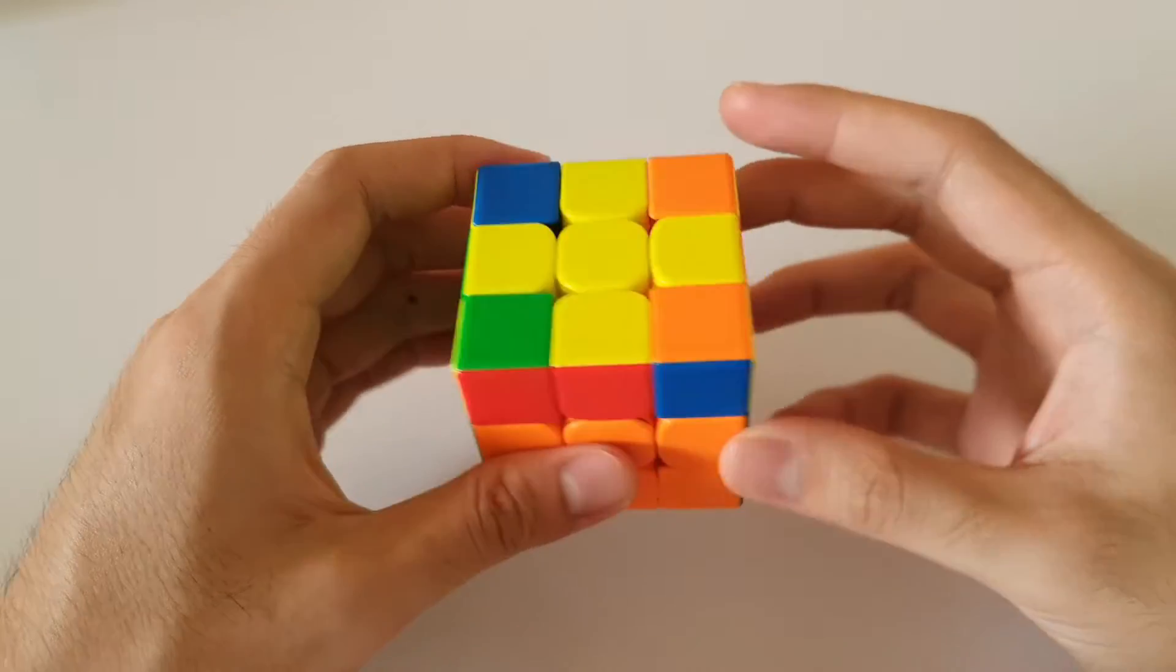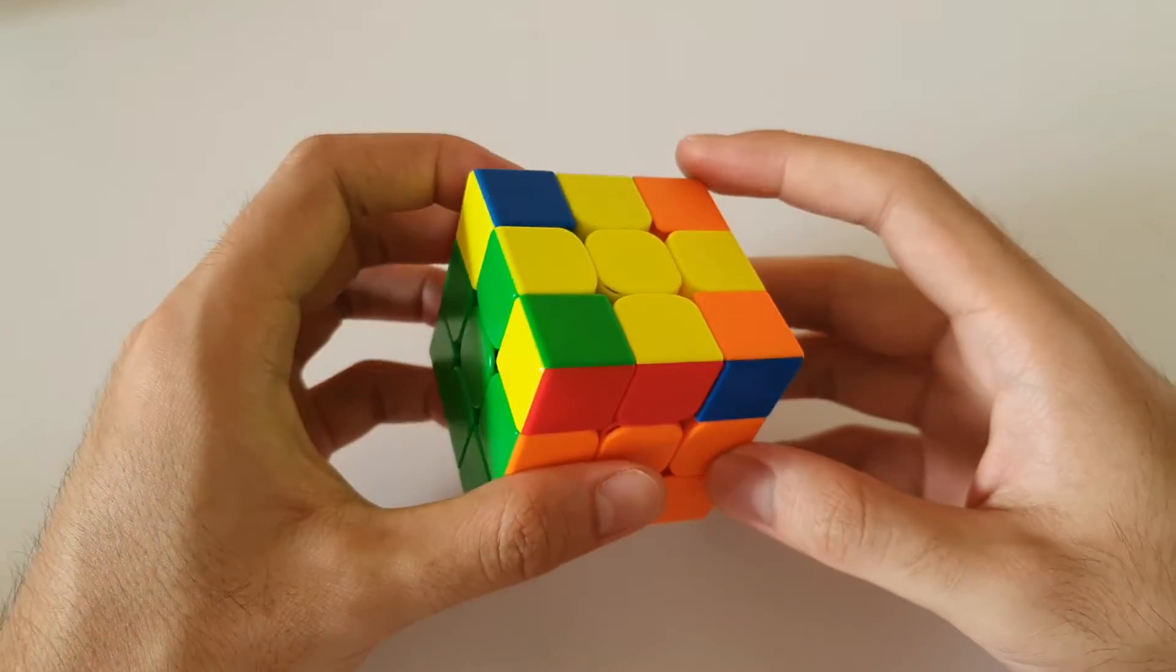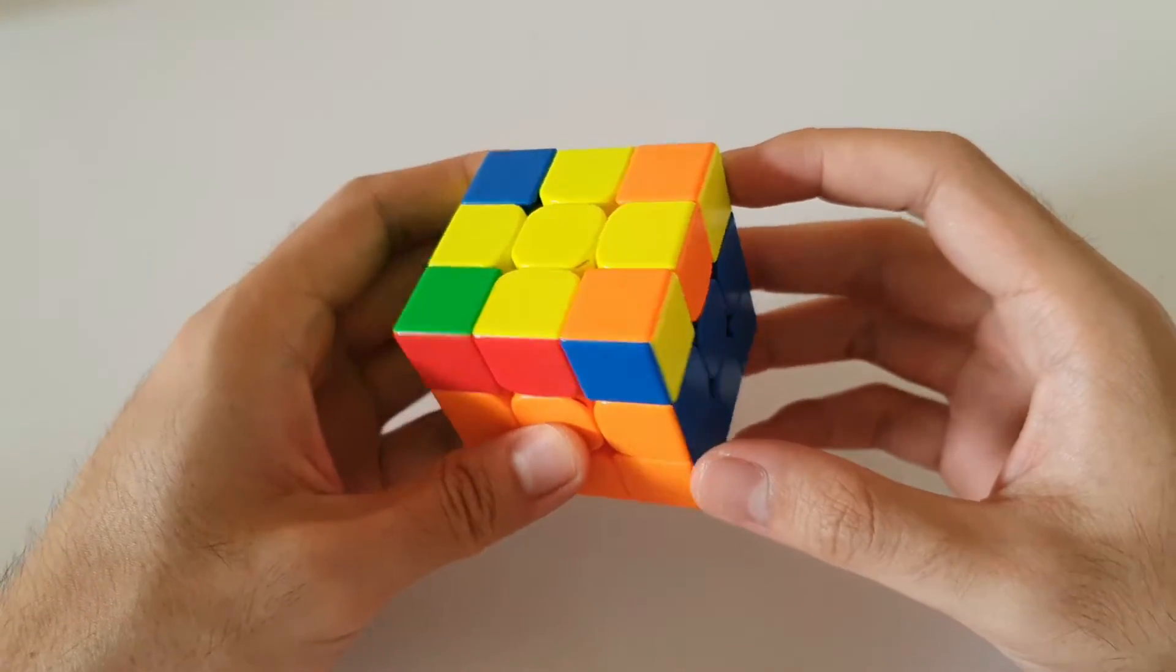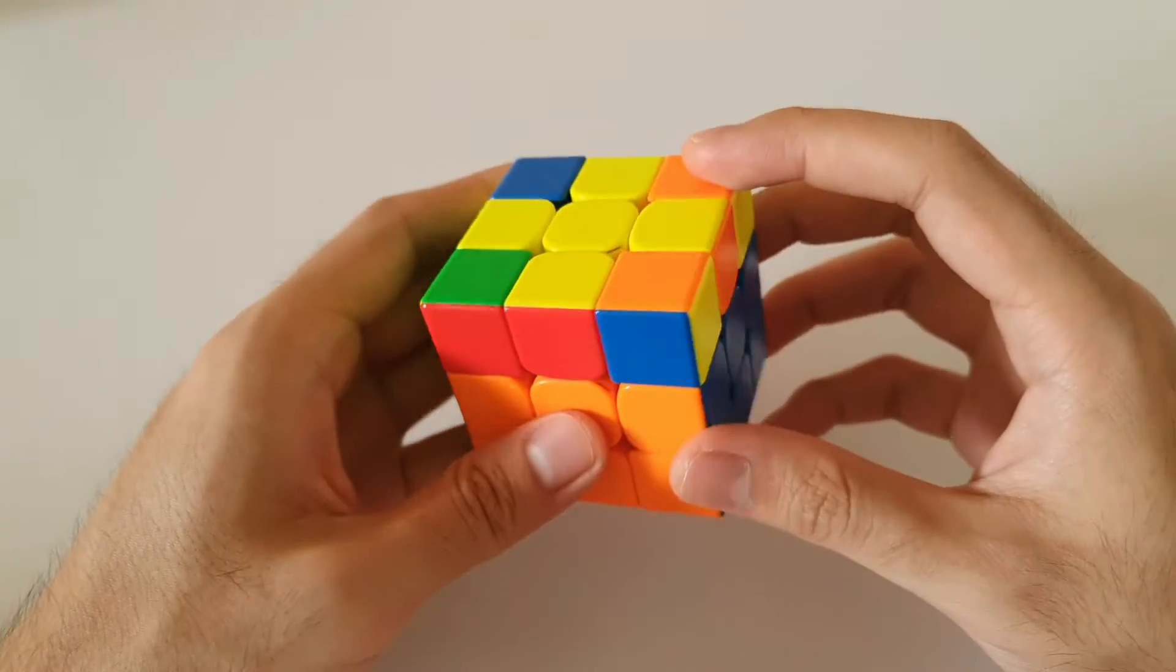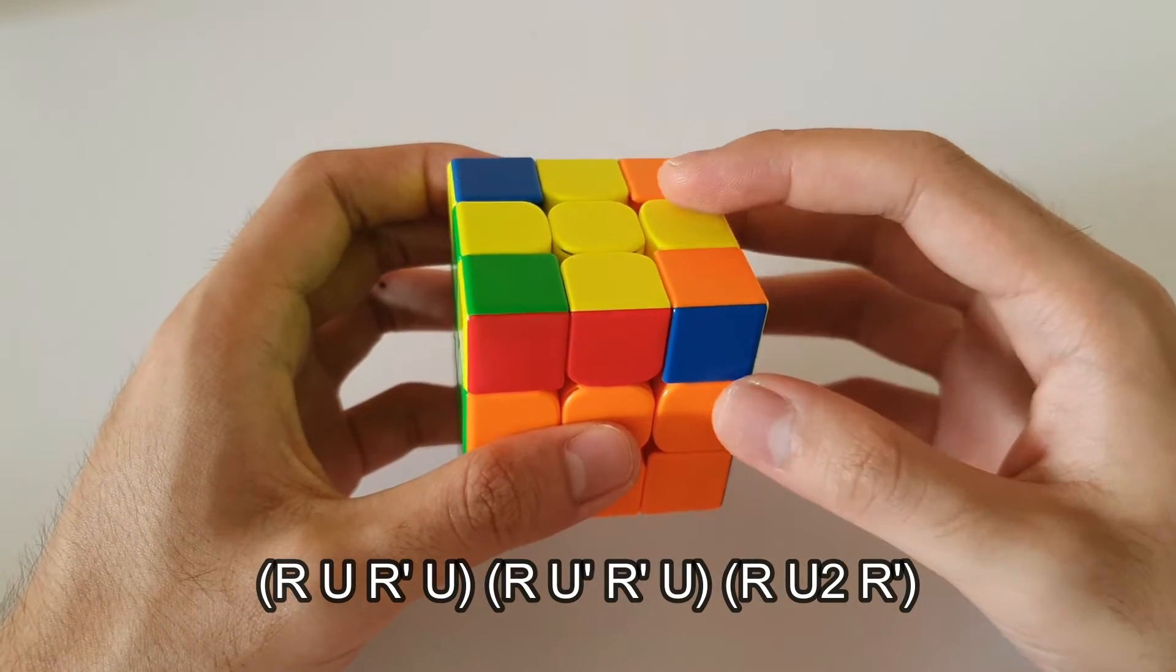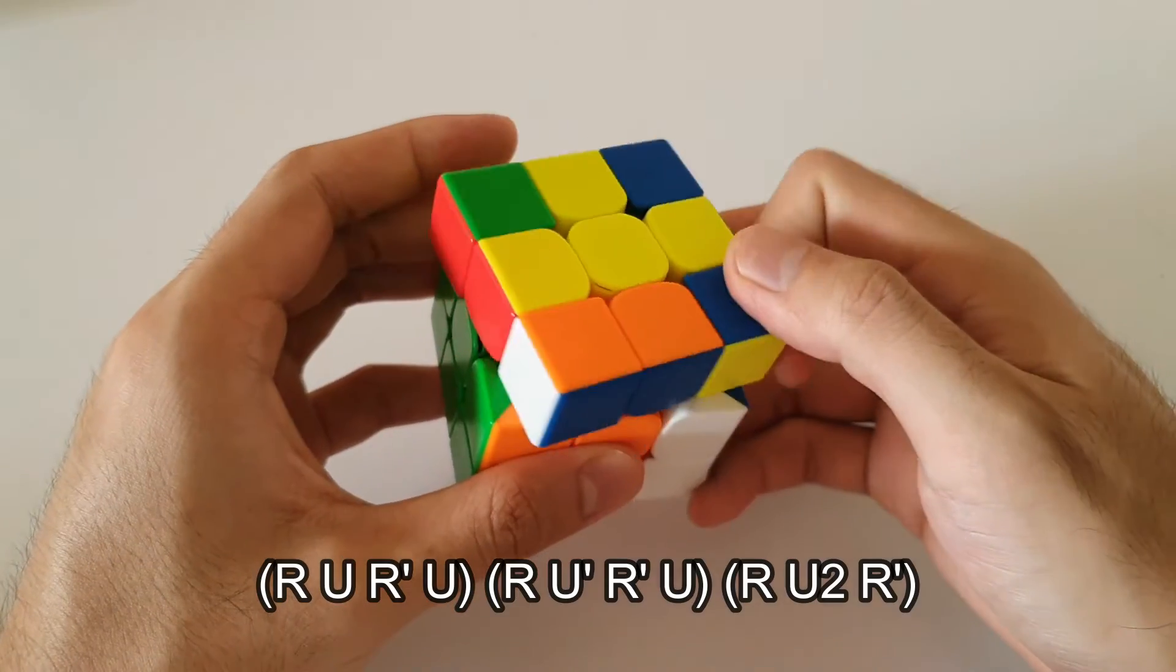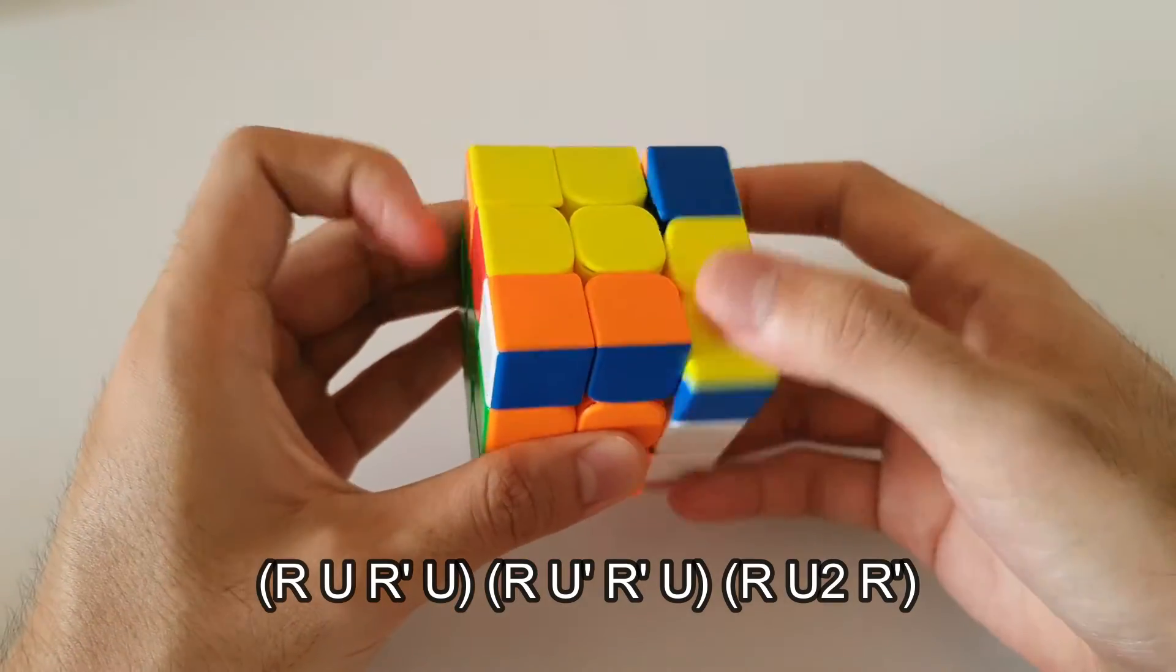So before I get into the algorithm, I actually want to go through the algorithm for this case because they're very similar. For this case, we should all know that the algorithm or one of the algorithms that you can use goes like this. So it's kind of like double soon, except a few moves in the middle get cancelled out.